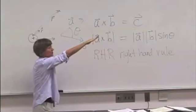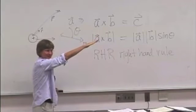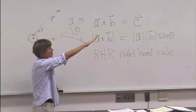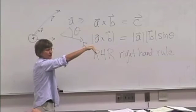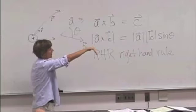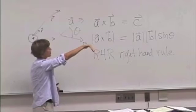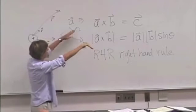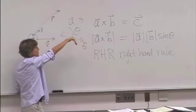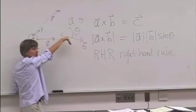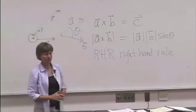So you put your fingers in the direction of the first vector, and then you curl your fingers through the angle theta toward the second vector, and your thumb sticks out in the direction of the cross product. So in the way we've got A and B here, A cross B, the cross product would be into the board, so three dimensions.